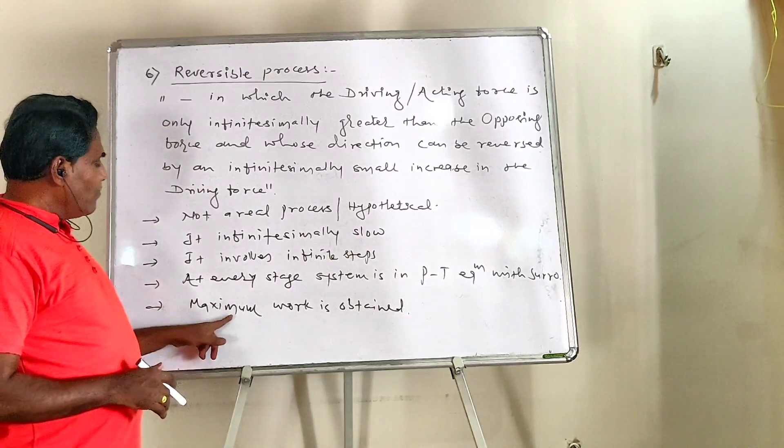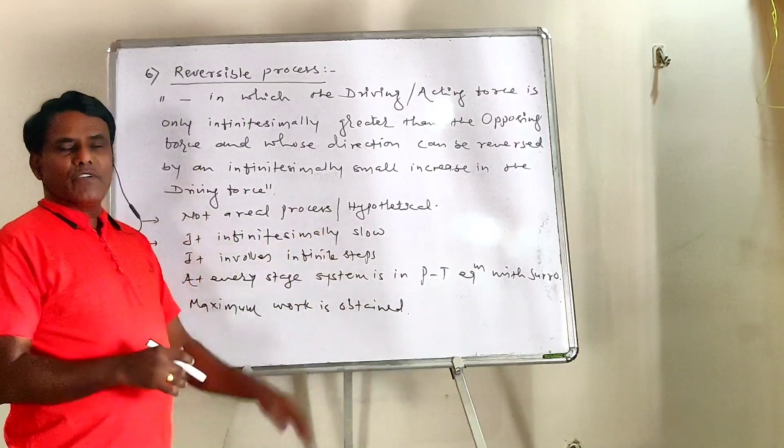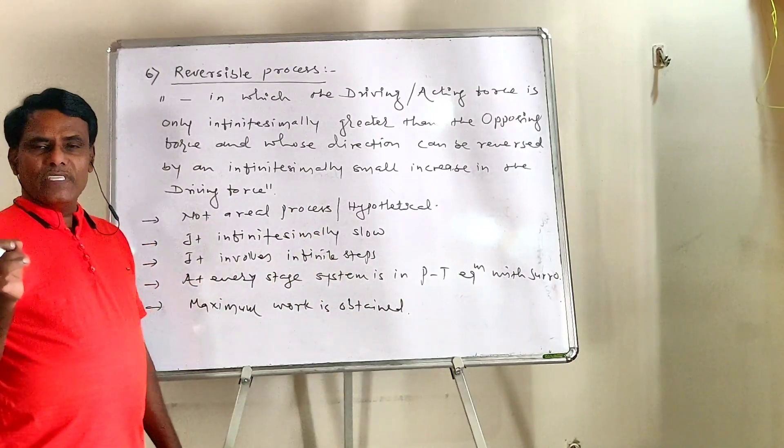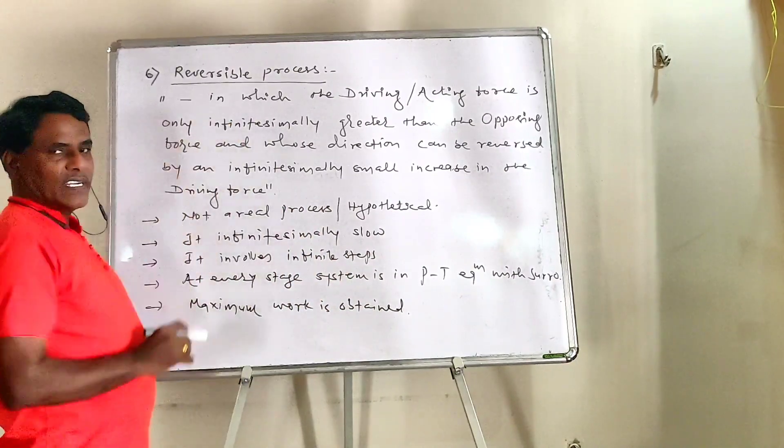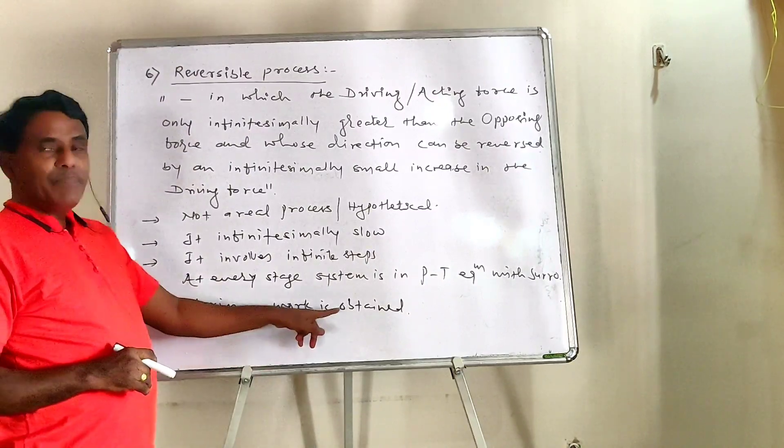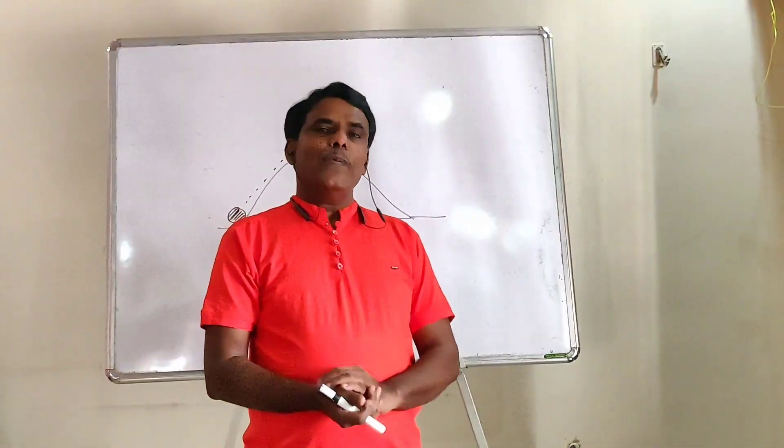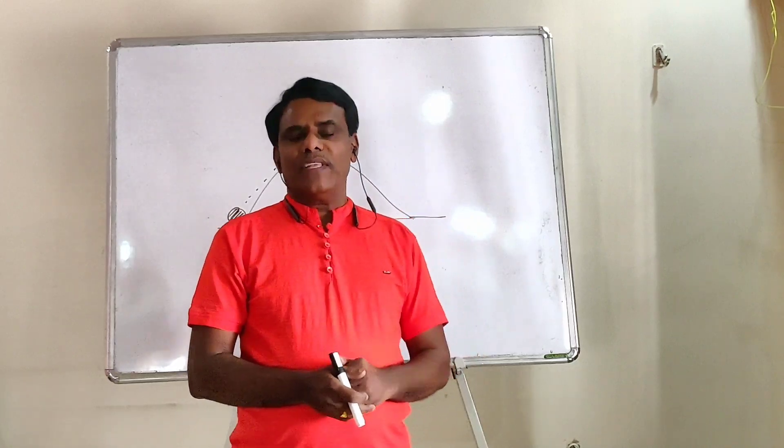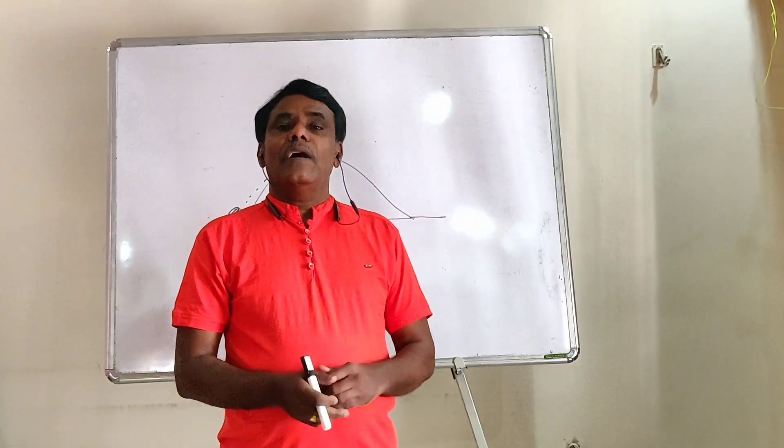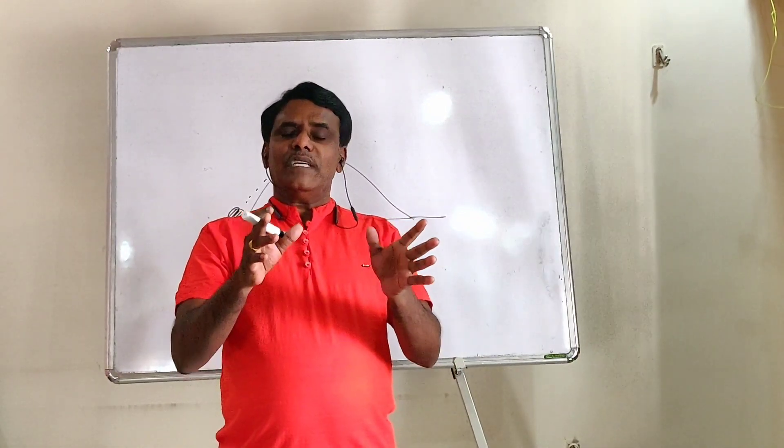And last point: in reversible process, maximum work is obtained from a system. If a system does work in a reversible way, then that work done will be maximum. Now, why is work done maximum in reversible process? How does this process occur?